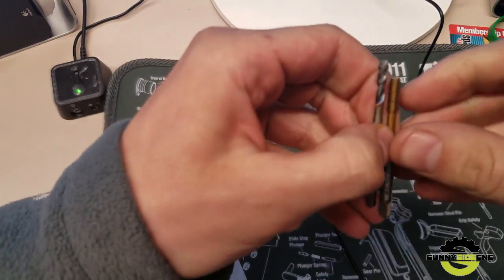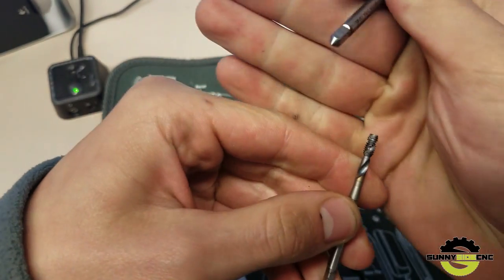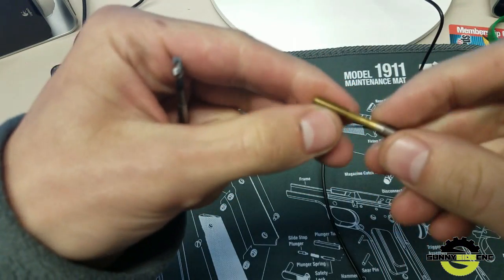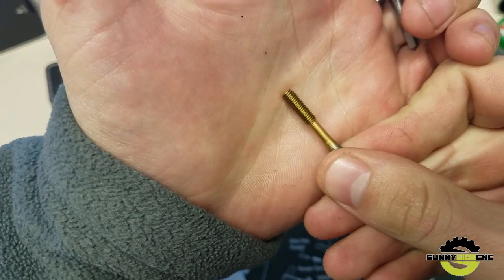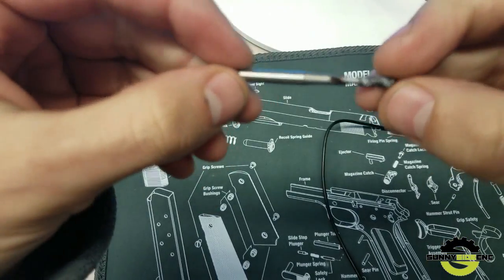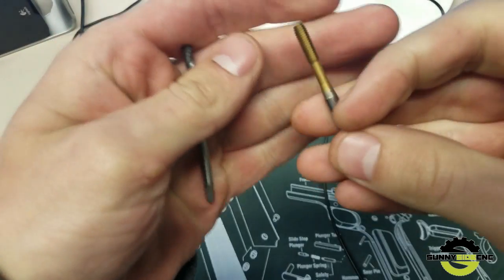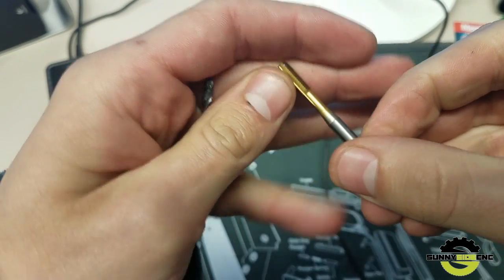First thing is you gotta know your tap. This is a cut tap which we are going to use today, and this is a form tap. The difference is this tap cuts the material, and this tap pushes the material over and actually forms your thread.